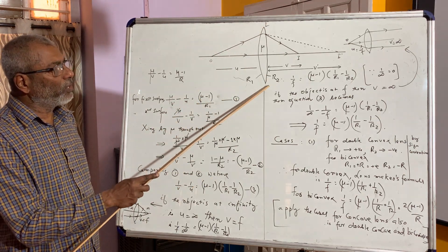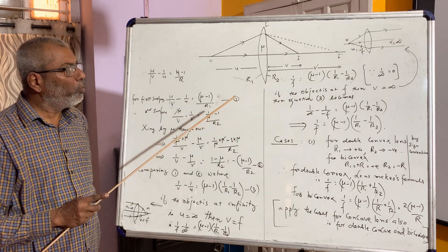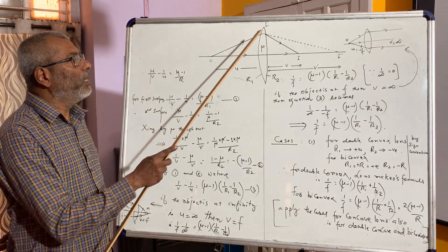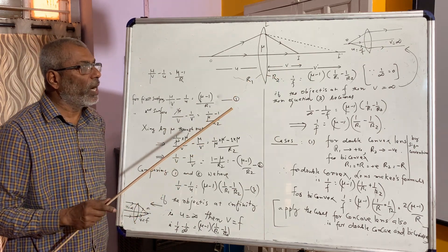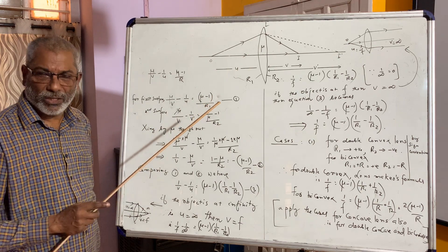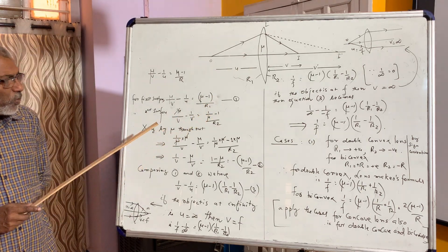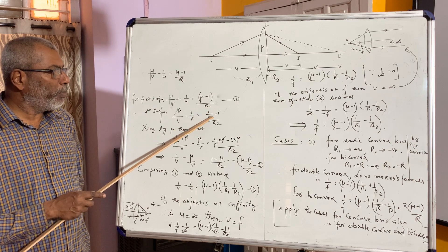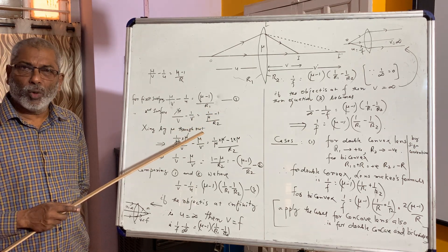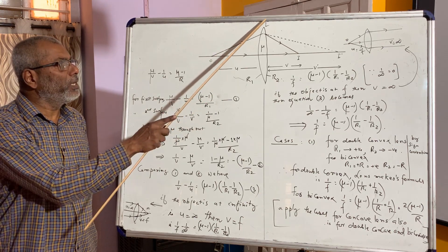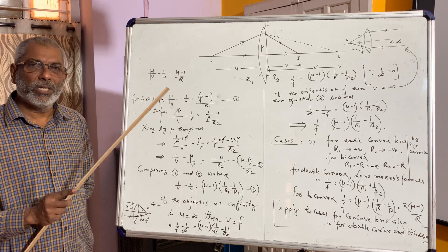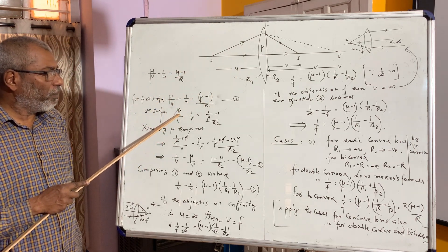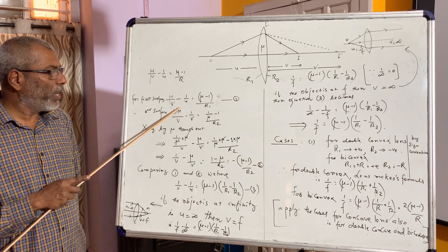For the second curved surface, the image at I' formed by the first curved surface acts as a virtual object. The second curved surface finally forms the image at I, at distance V from the lens. For the second curved surface we can write: (1/μ)/V minus 1/V' is equal to (1/μ minus 1)/R2. You may ask why 1/μ — because in the second curved surface, light is travelling from denser medium to rarer medium, whereas the first surface was rarer to denser. By the principle of reversibility, the refractive index is given by 1/μ.